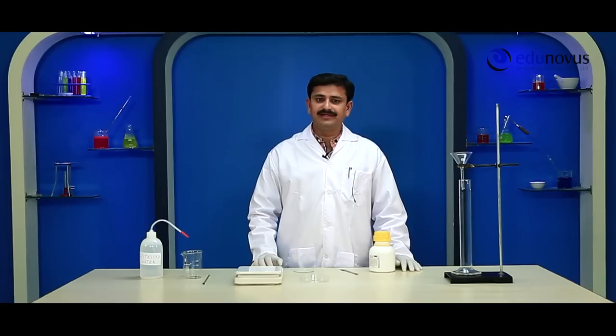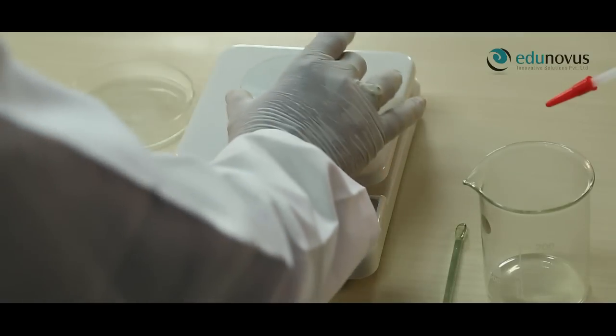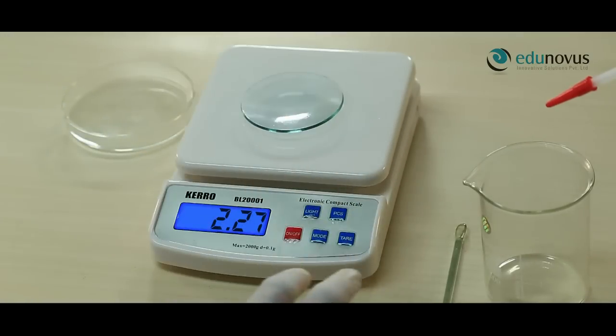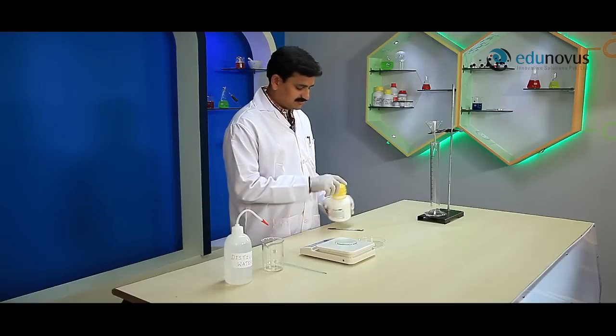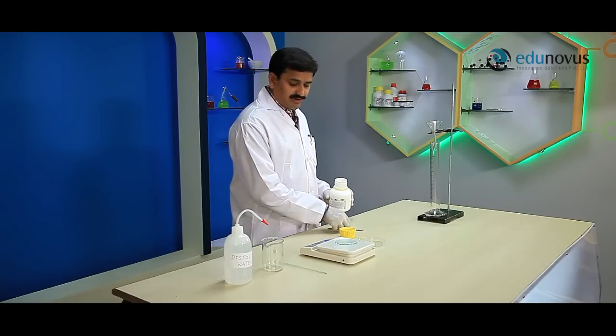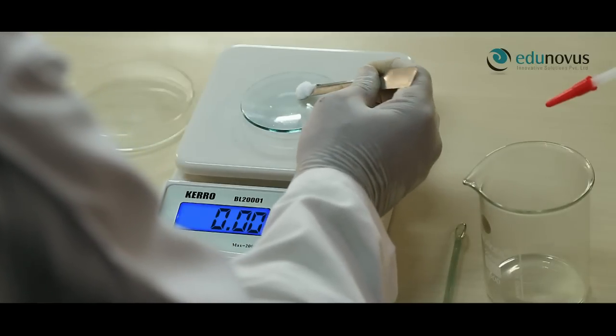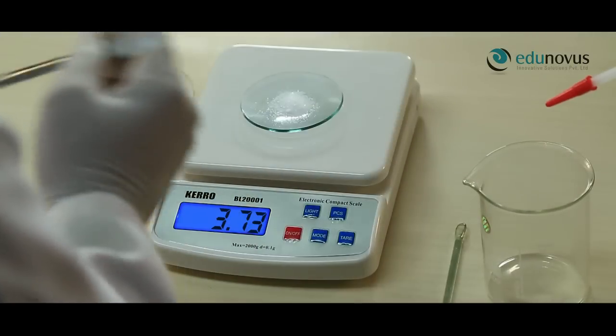Take a clean and dry watch glass. Now we place it on the weighing machine and zero its reading. After that, weigh 3.150 grams of crystalline oxalic acid on the watch glass.